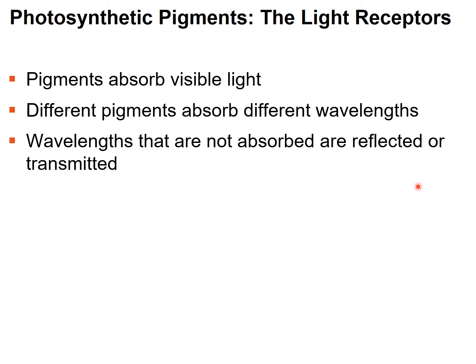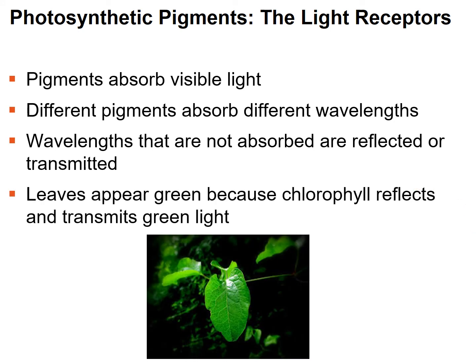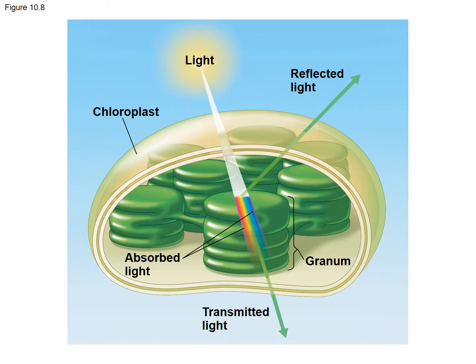When a plant appears green, that's the wavelength not being absorbed — it's being reflected. Leaves appear green because chlorophyll reflects green light rather than absorbing it. Light travels through the cell and chloroplast, and different wavelengths associated with visible colors are absorbed. Chlorophyll absorbs all other colors but reflects green — it doesn't absorb the wavelength associated with green.